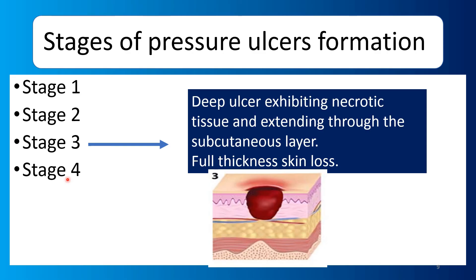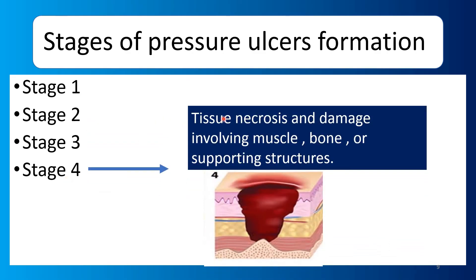Stage 4 involves tissue necrosis and damage involving muscle, bone, or supporting structures. First the epidermis is involved, then dermis, then subcutaneous fat, then soft tissue, and then bone. All layers — skin, fat, soft muscles, and bone — are damaged. Necrosis is extensively spread.